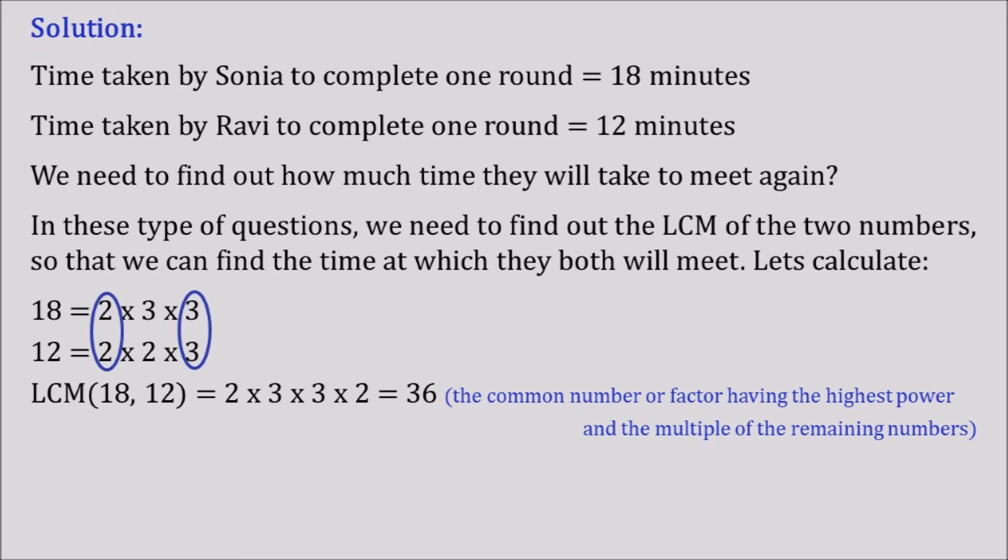So here the common factor is 2 and the second common factor is 3. Both of them are having the power of 1. So we have picked up 2 to the power 1 into 3 to the power 1 and then we have included the rest of the numbers like into 3 into 2. So for that reason altogether we are getting 36.